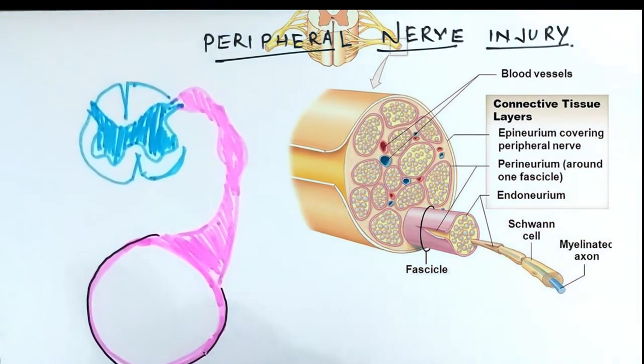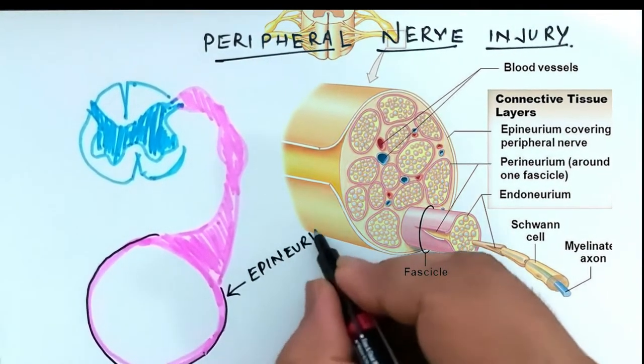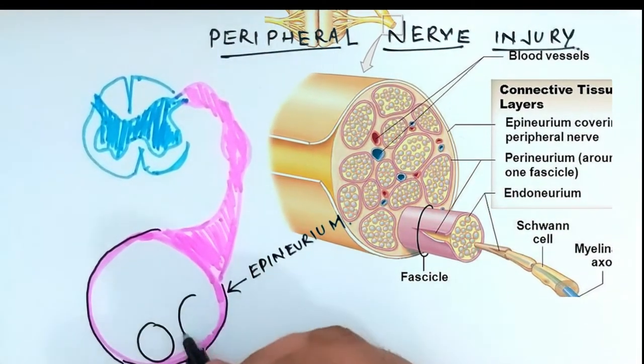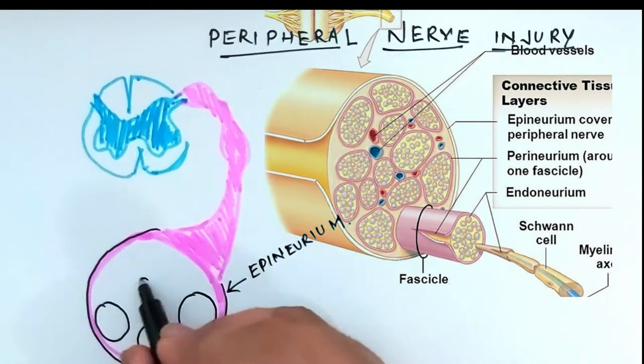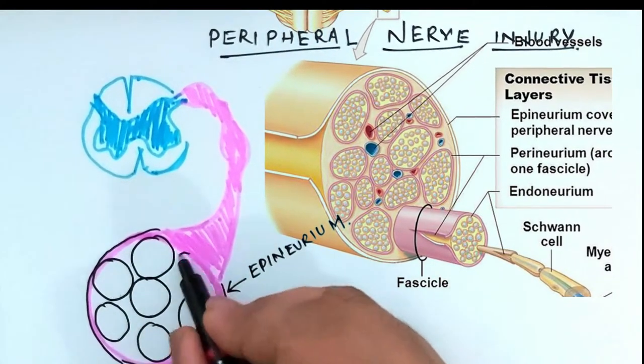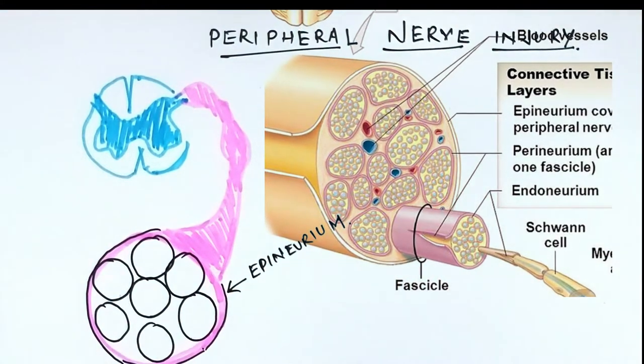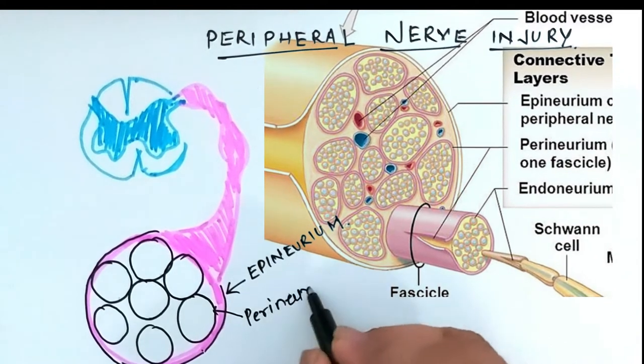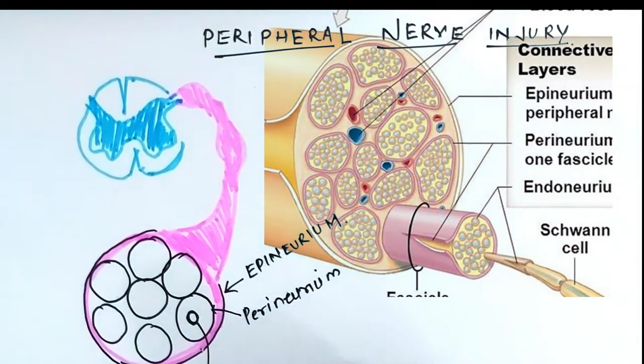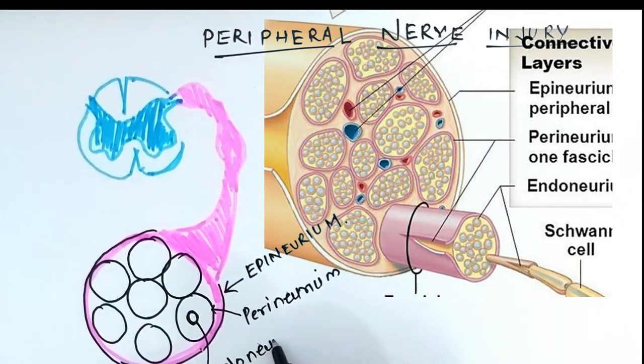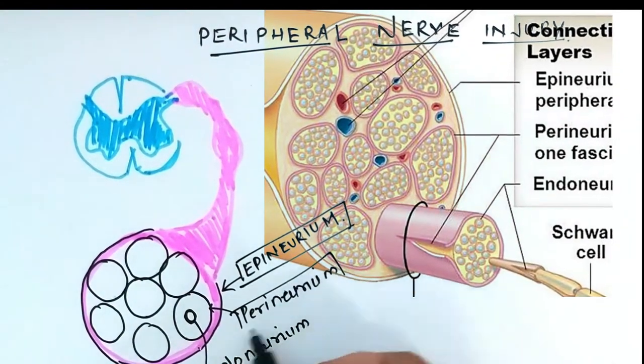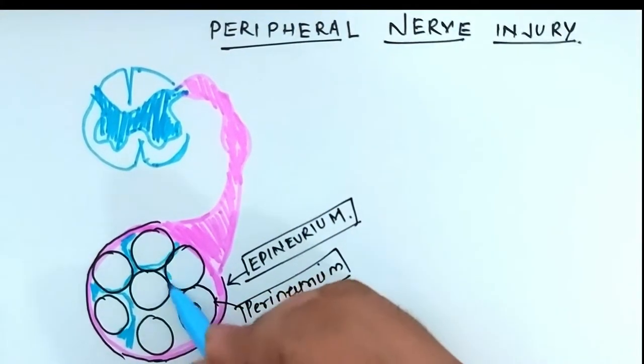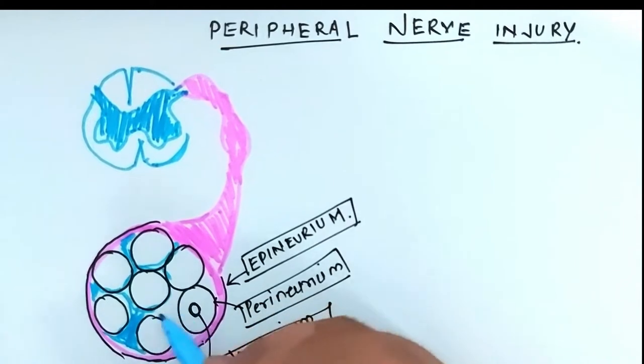Now, a cross-section image of the peripheral nerve shows that the outermost layer is called the epineurium, which encloses in a tubular form a group of axons bundled together called fasciculi. This fasciculi are covered by a connective tissue layer called perineurium, and a single axon is covered by endoneurium. Remember these three layers - this will help you understand the classification of nerve injury at the end of this video.